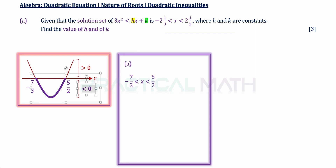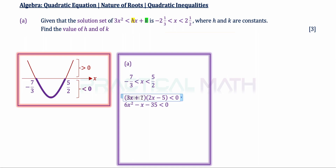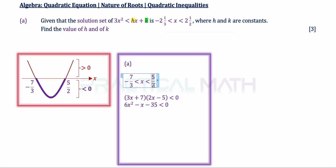By working backwards, negative 7 over 3 on the left can be rewritten as bracket 3x plus 7, because if we set 3x plus 7 equal to 0, x equals negative 7 over 3. The denominator becomes 3x and since it was a minus, writing backwards it becomes a plus. Likewise, 5 over 2 on the right gives us bracket 2x minus 5, because setting 2x minus 5 to 0 gives x equals 2.5. We set the product to be less than 0 because it is a one-range answer.